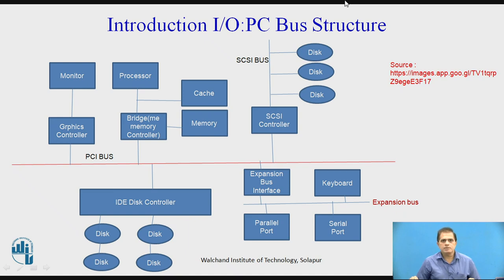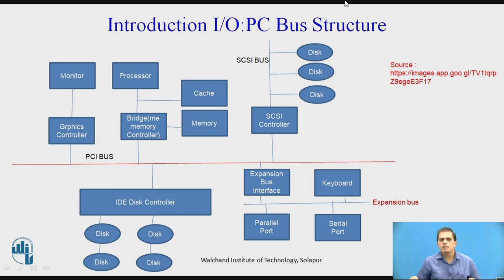Now look at this diagram. It is an introduction of the input-output PC bus structure. Here we are having multiple different types of input and output devices which are getting connected with the main processor. Here I have drawn one block diagram of a typical PC bus structure. The CPU has cache memory connected, where the processor stores its frequently required data or instructions. With this main memory, there is a bridge memory controller, and data may also come from IO devices.